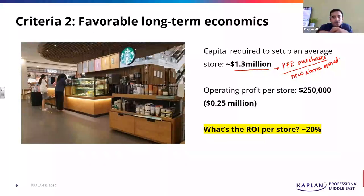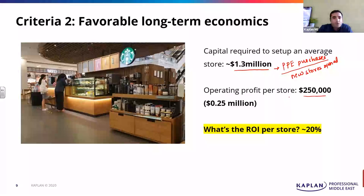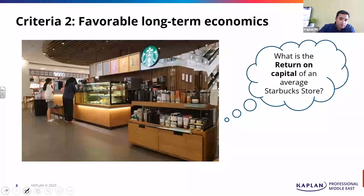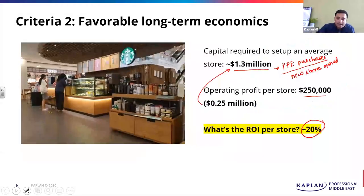What is the operating profit on a per-store basis? A per-store Starbucks in a year makes a profit — all costs covered, including product cost, store operating expenses, and even allocating the CEO salary divided by total stores. Looking at Starbucks' operating income divided by total stores they own, it's almost 20%. So Starbucks runs a coffee shop where they invest money and earn approximately 20% return on capital. The first criteria was business should have a high return on capital employed — but is it scalable? Can they keep doing this investment of $1.3M and keep growing?